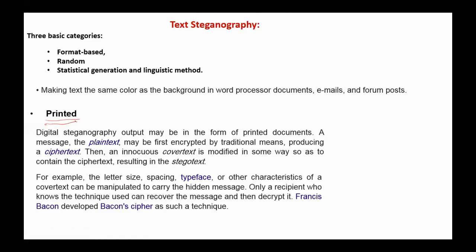Digital steganography output may also be in the form of printed documents. A message — the plaintext — may be first encrypted by traditional means, producing a ciphertext. Then the cover text is modified in some way to contain the ciphertext, resulting in stego text. For example, the letter size, spacing, typeface, or other characteristics of a cover text can be manipulated to carry the hidden message. Only a recipient who knows the technique used can recover the message and then decrypt it.